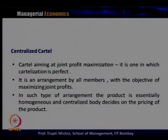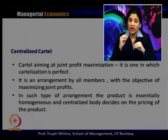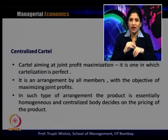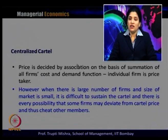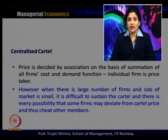Cartel aiming at joint profit maximization is one where cartelization is perfect. We call this perfect cartelization. It is an arrangement by all members with an objective to maximize profit, where the product is essentially homogeneous and a centralized body decides the pricing. Price is decided by the association or central agency on the basis of the summation of all firms' cost and demand functions. Individual firms are not the price makers — they are price takers, accepting the price decided by the central agency.